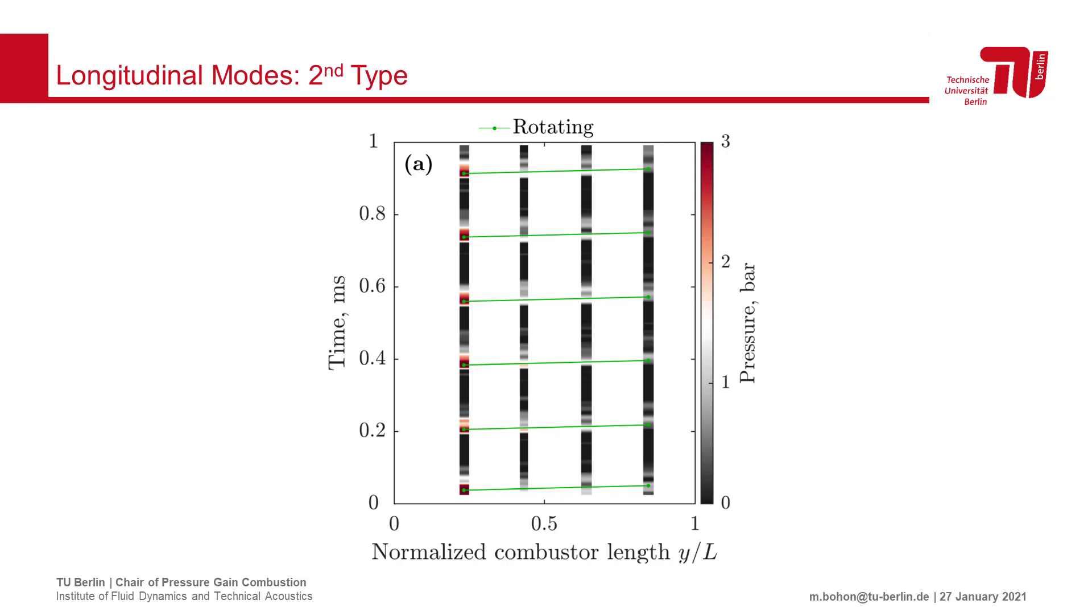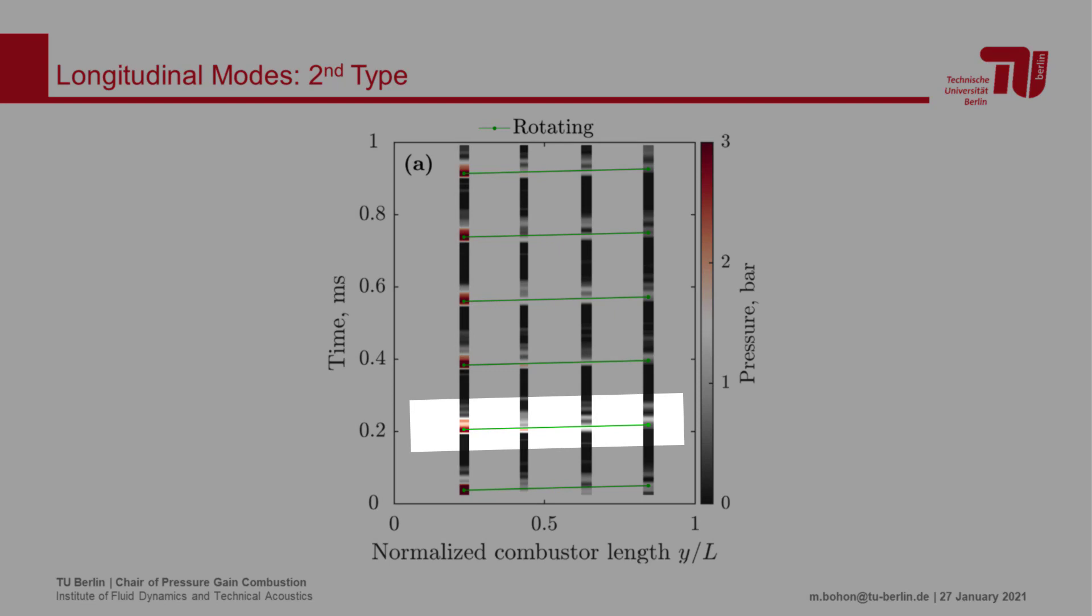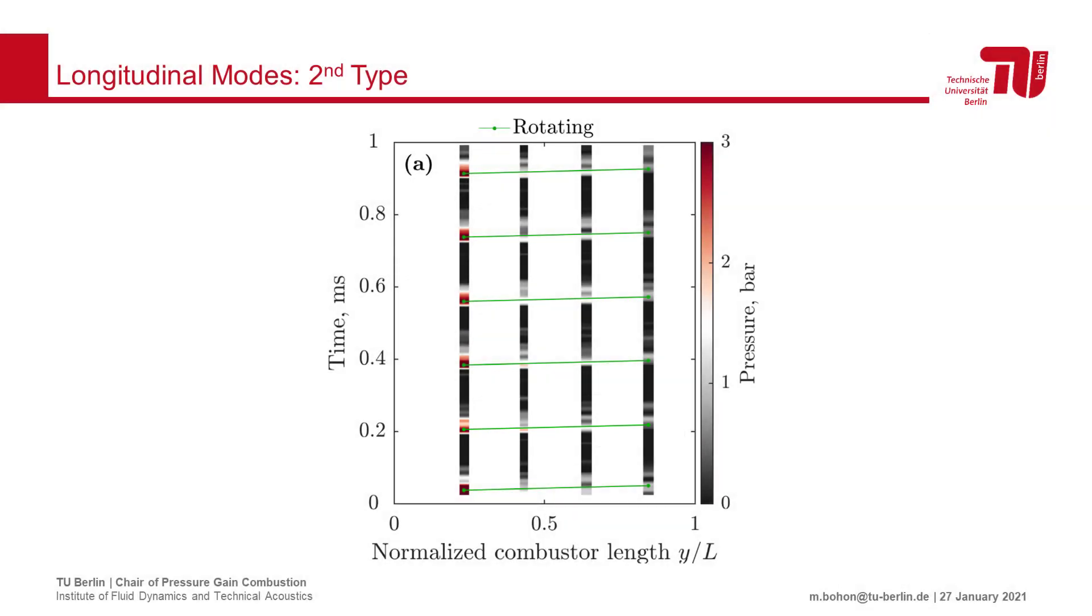The primary detonation wave and the subsequent oblique shock can be seen throughout the length of the combustor by tracing the periodic light-colored regions in the pressure field indicating periodic pressure peaks. The rotating wave structure can then be identified by the green line in the figure.